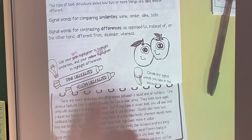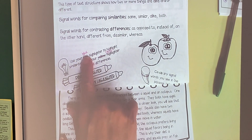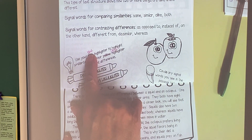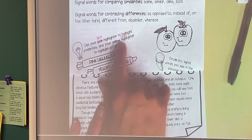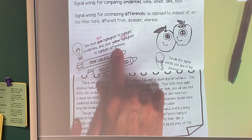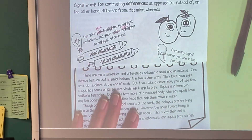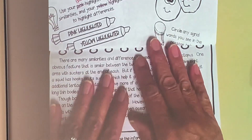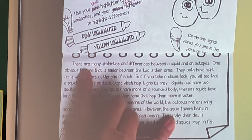We'll use blue to highlight similarities and green to highlight differences. Everybody's got that? Alright, so Reed, you're up. Nice and loud.